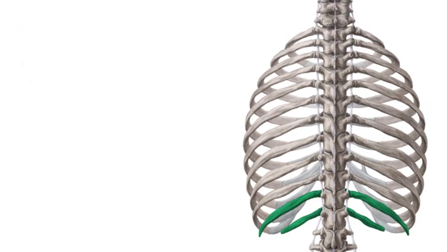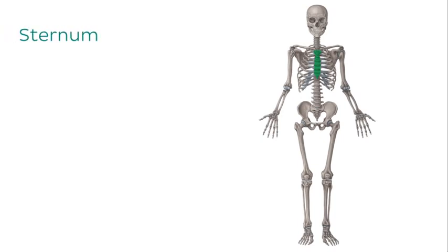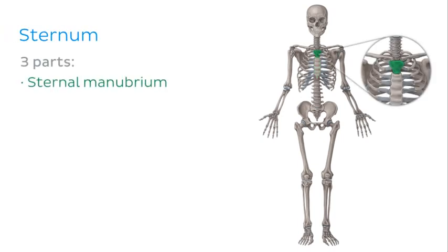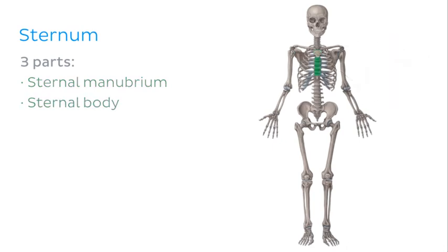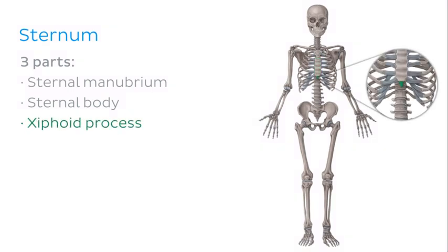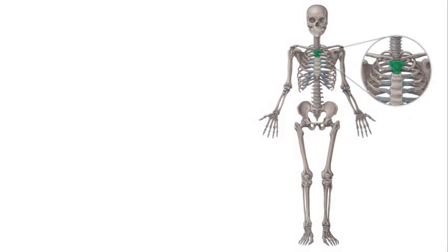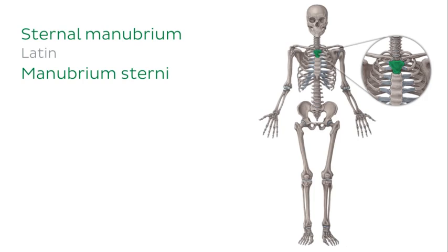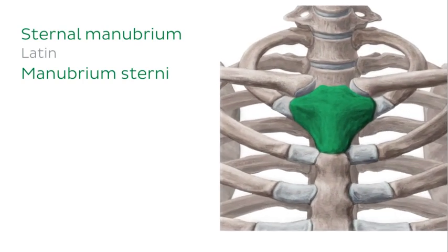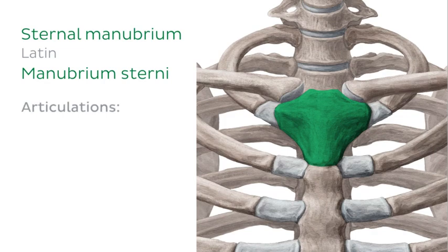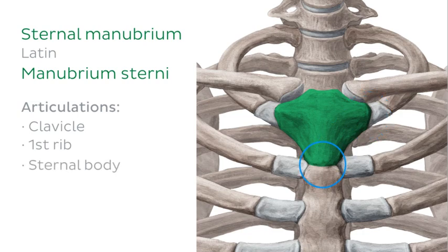The last structure of the trunk we'll look at today is the sternum or the breastbone. The sternum is composed of three parts: the sternal manubrium, the sternal body and the xiphoid process. We'll explore the sternum in a superior to inferior direction starting with the sternal manubrium, which is a quadrangular shaped bone that articulates with the clavicle, the first rib, the sternal body and the second rib.